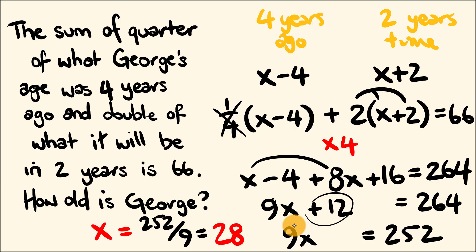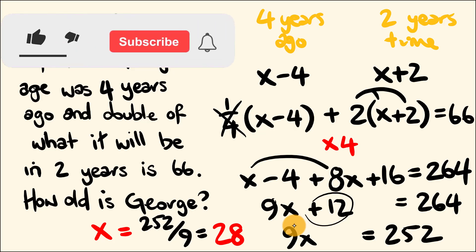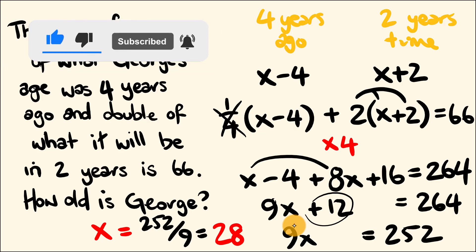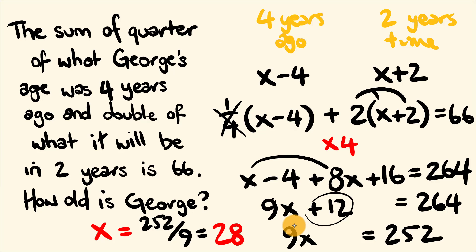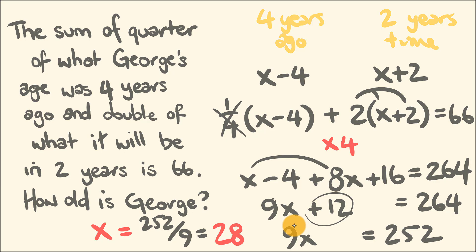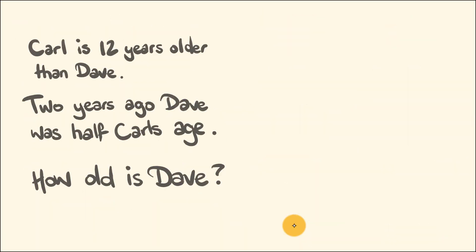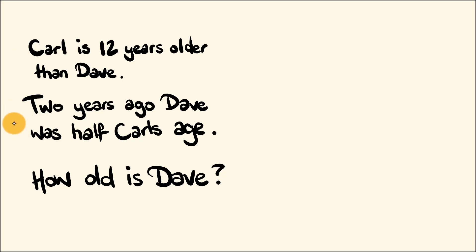That's how you solve age problems. In honour of my patrons, here's one last question. Carl is 12 years older than Dave. Two years ago, Dave was half of Carl's age. How old is Dave?